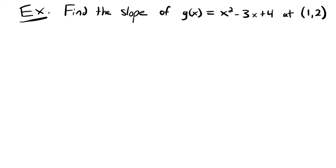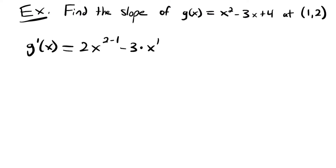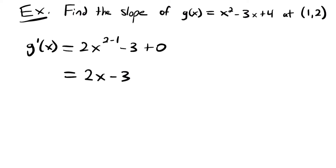Let's look at another example. We want to find the slope of the function g of x equals x squared minus 3x plus 4 at the point (1, 2). Instead of giving just an x value, you might get the specific point. Just like last time, we'll find the derivative. g prime of x equals 2x — applying the power rule — minus 3 times x to the 1 minus 1, which is x to the 0, which is just 1. So the derivative of negative 3x is just negative 3, and the derivative of the constant 4 is 0. So our derivative simplifies to 2x minus 3.